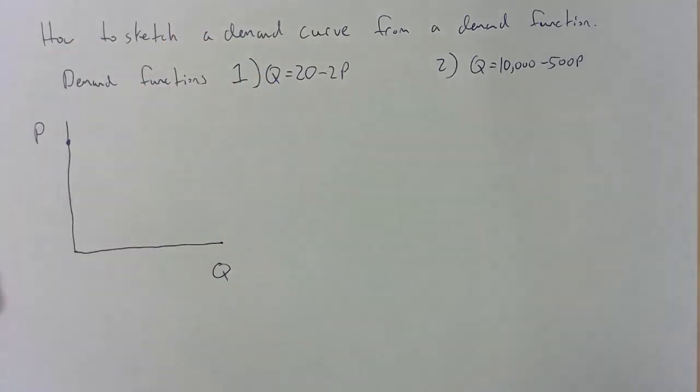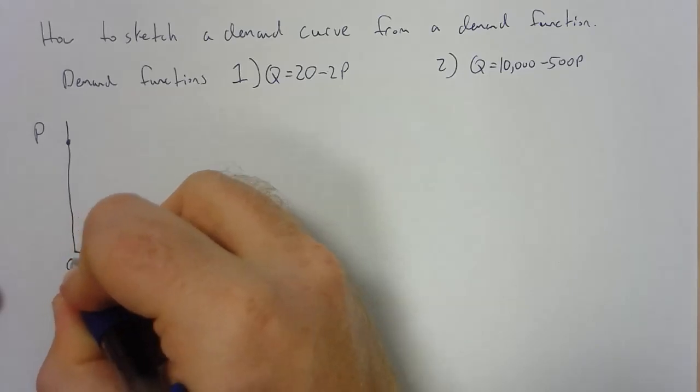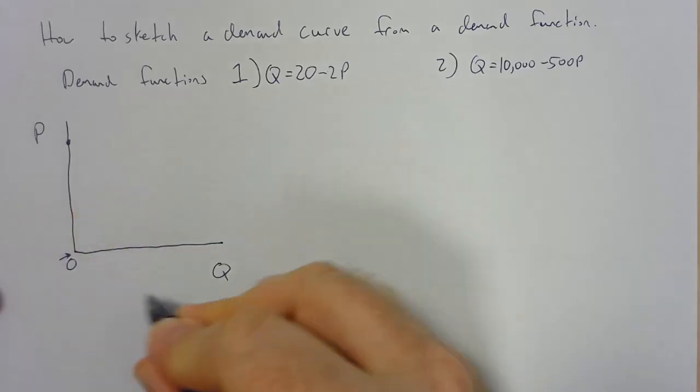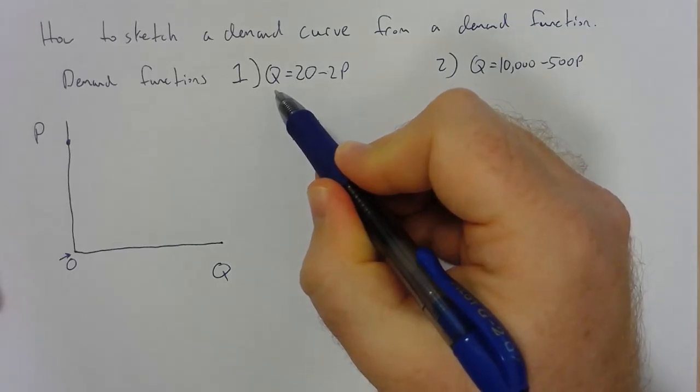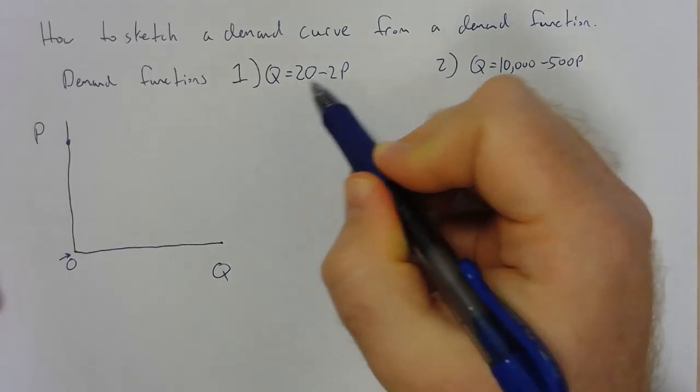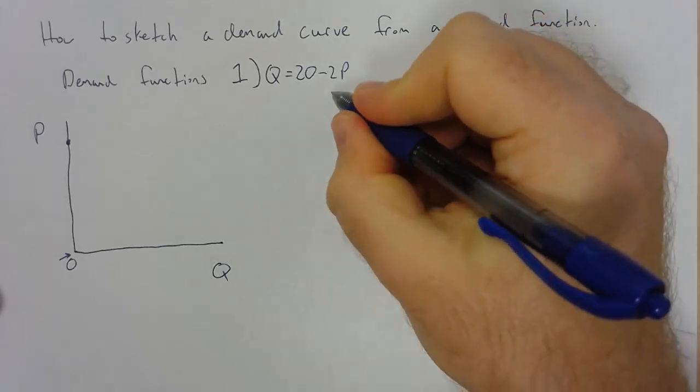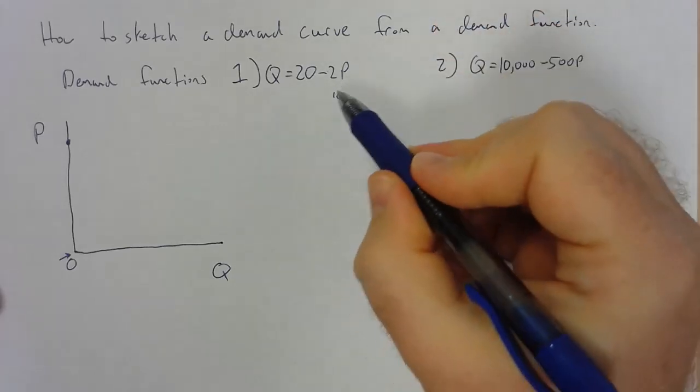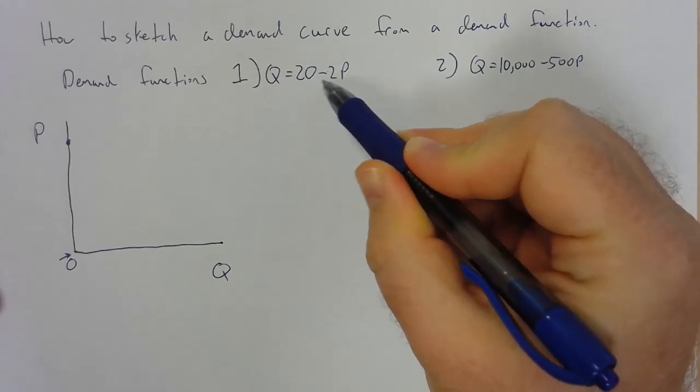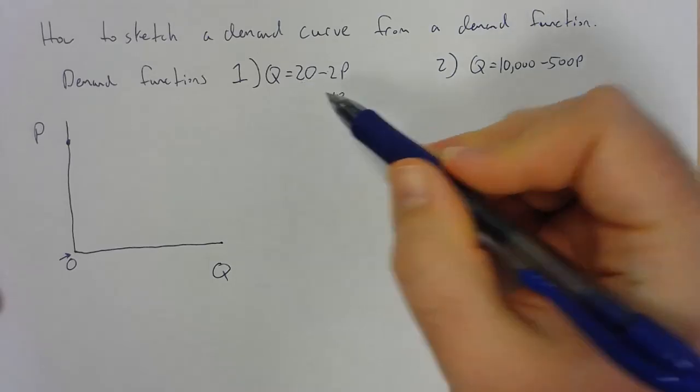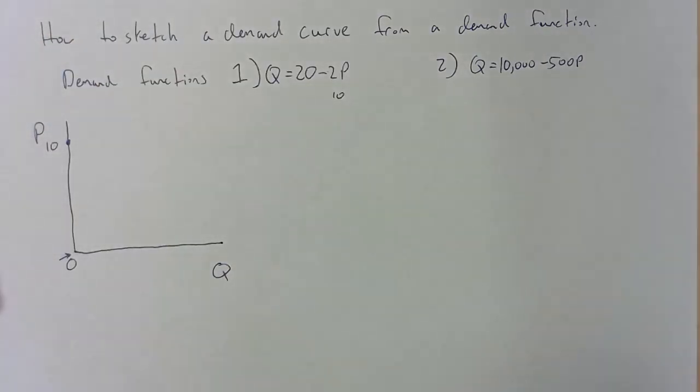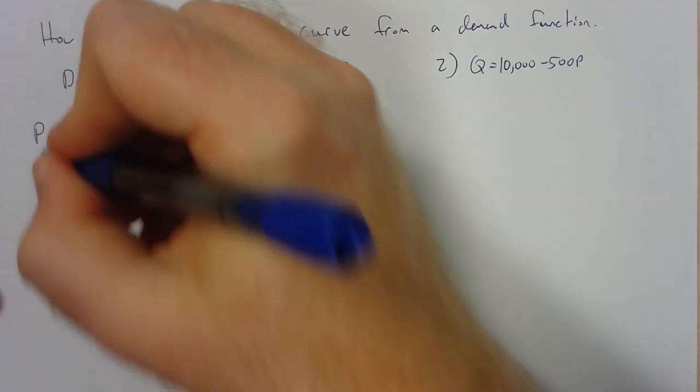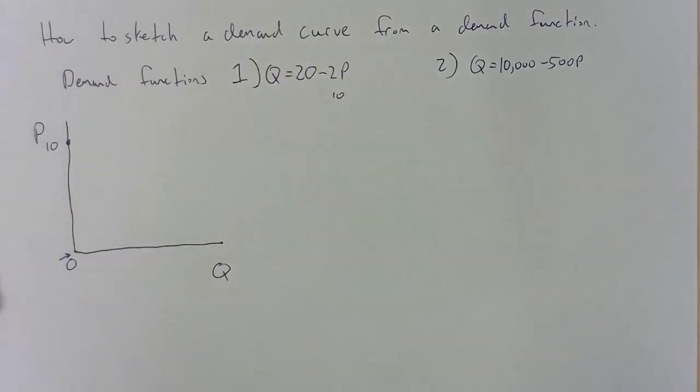The trick here is to remember that the intercept is going to occur where quantity equals zero. So what you can do here is find that at quantity equals zero, what does p have to be? We can see pretty quickly that if p is 10, 10 times 2 equals 20, 20 minus 20 equals zero. Price has to be equal to 10, and so we know that this demand curve is going to intersect the price axis at a value of 10.